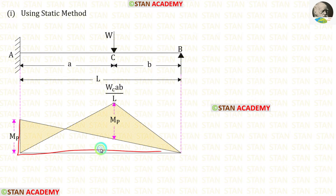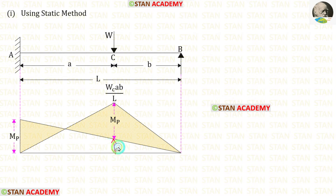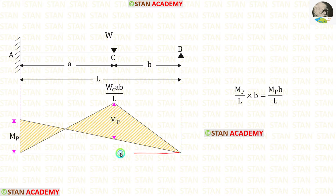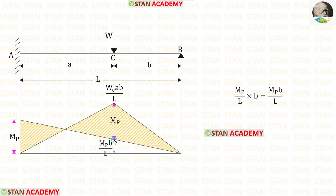This is the diagram for the end moment at point A. During the collapse we will have the plastic moment at the fixed end and under the load. Now we have to find this height. For the distance of l the height is Mb, so for l it is Mb. But we have to find the height at the distance of b, so we multiply by b. Finally we get this height as Mb upon l.